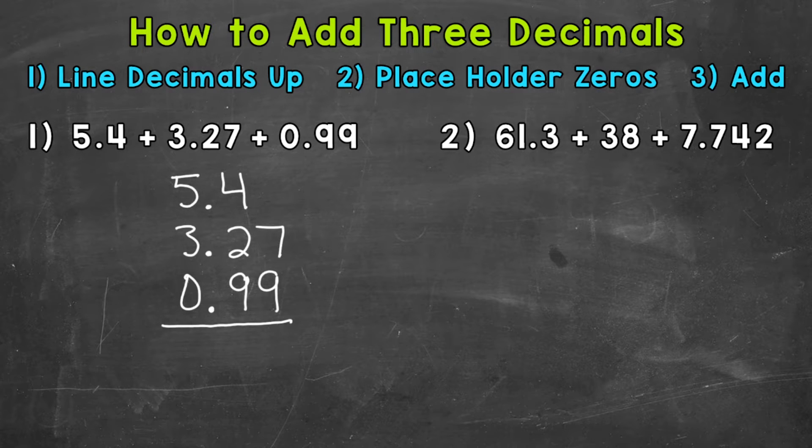So our decimals are lined up. Now, the problem does look a little offset because 5.4 doesn't go to the hundredths place like the other decimals. So we can use placeholder zeros so this problem looks a little more lined up. Remember, zeros to the right of a decimal do not change the value. They give us an equivalent decimal, so we can do this. Let's put a zero in the hundredths place. Now everything goes to the hundredths and we're a little more lined up.